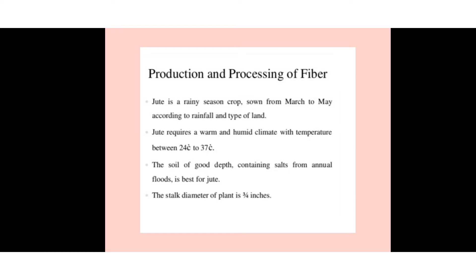Jute is sown from March to May according to rainfall and land type. It requires a warm and humid climate with temperatures between 24°C and 37°C. The soil should be good, deep, and enriched with silt from annual floods, which is best for the jute crop.